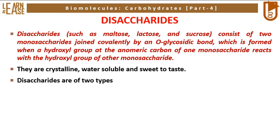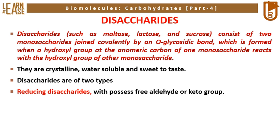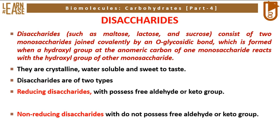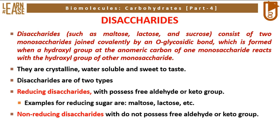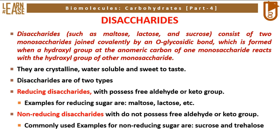Disaccharides are of two types: reducing disaccharides, which possess a free aldehyde or keto group, and non-reducing disaccharides, which do not possess a free aldehyde or keto group. Examples of reducing sugars are maltose, lactose, etc. Commonly used examples of non-reducing sugars are sucrose and trehalose.